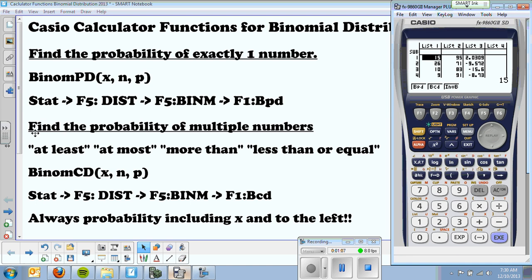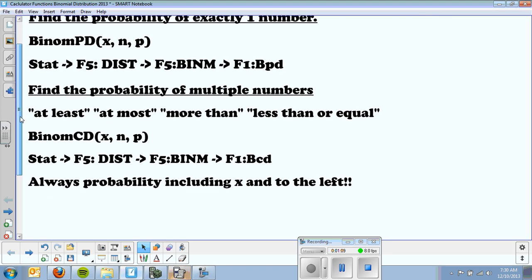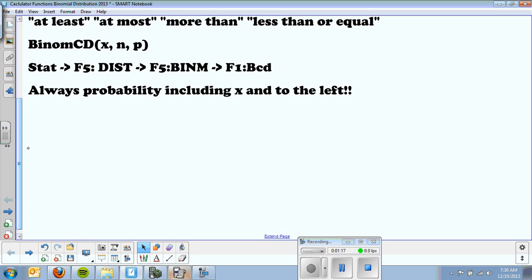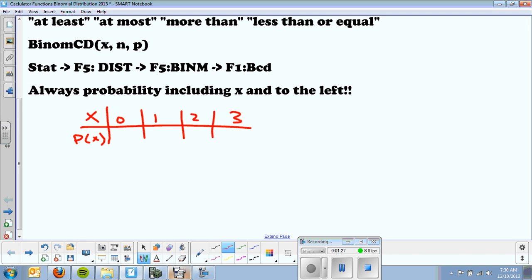With this cumulative density function, that's what CD stands for, it's always the probability including X and to the left. So if I had a quick probability distribution table, P of X, and my possibilities were 0, 1, 2, 3, and I typed in binomial CD.